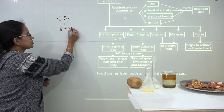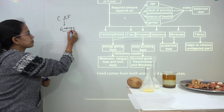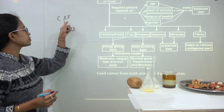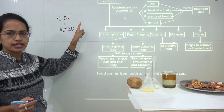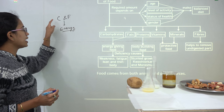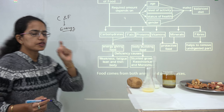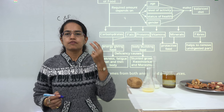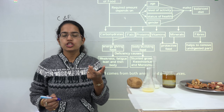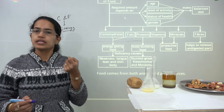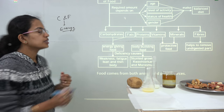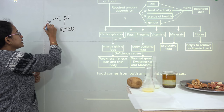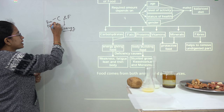Good examples of fat include ghee and oil. When we talk about carbohydrates, we talk about food that provides starch. For example, rice and potatoes are all rich in carbohydrates.